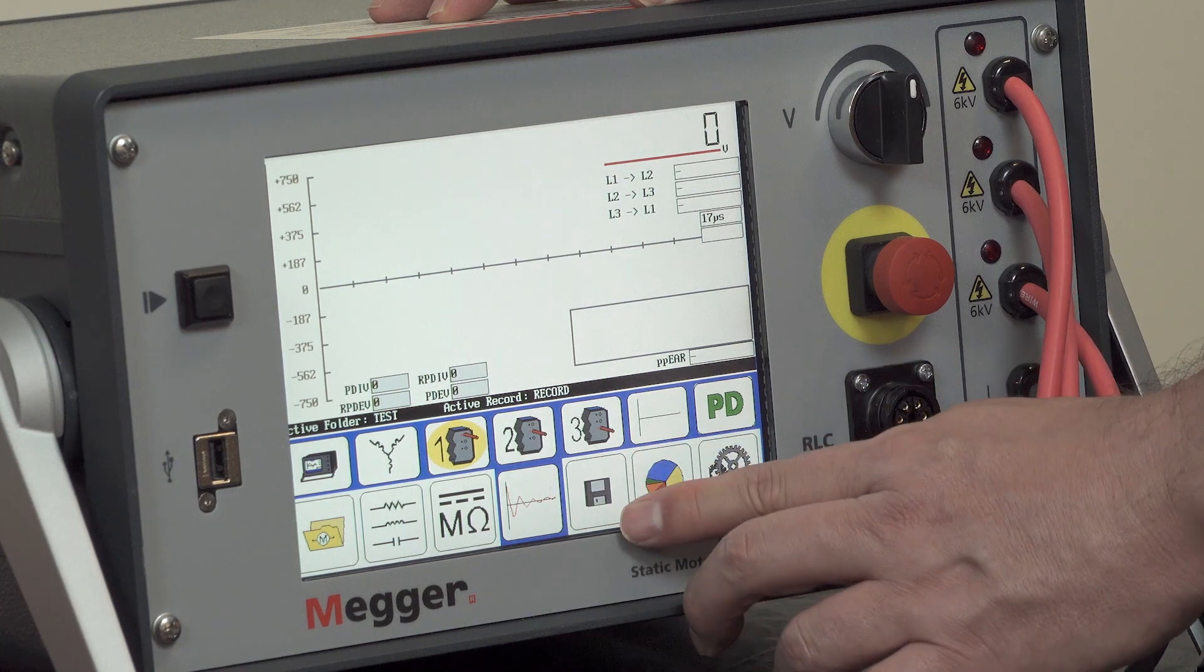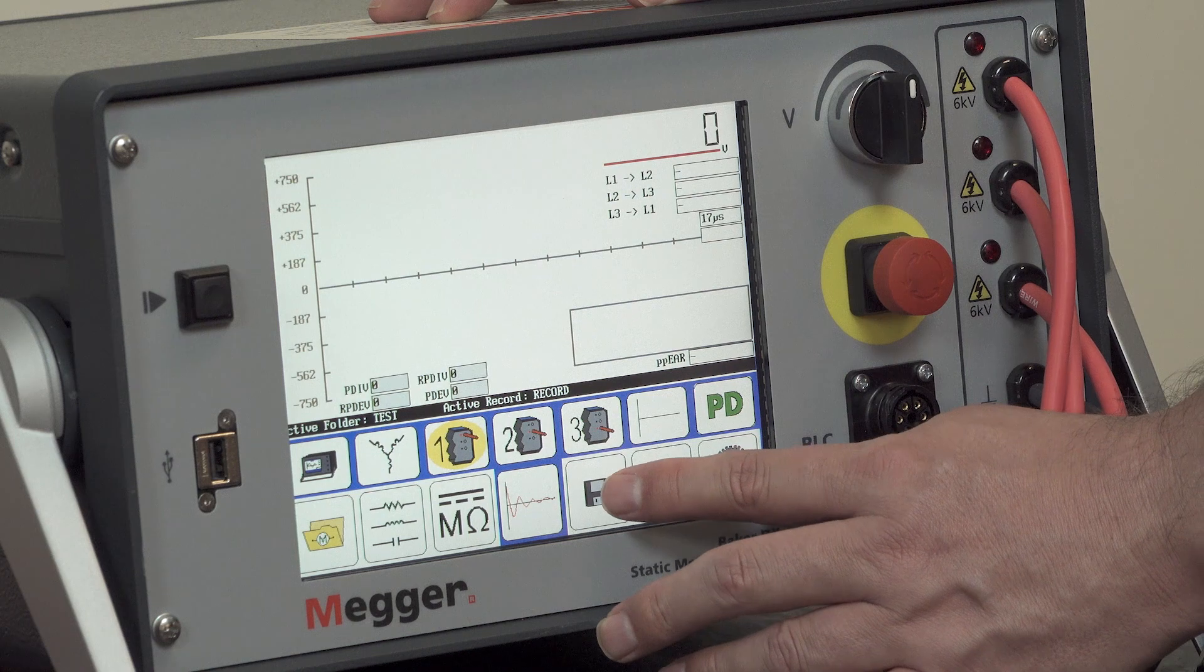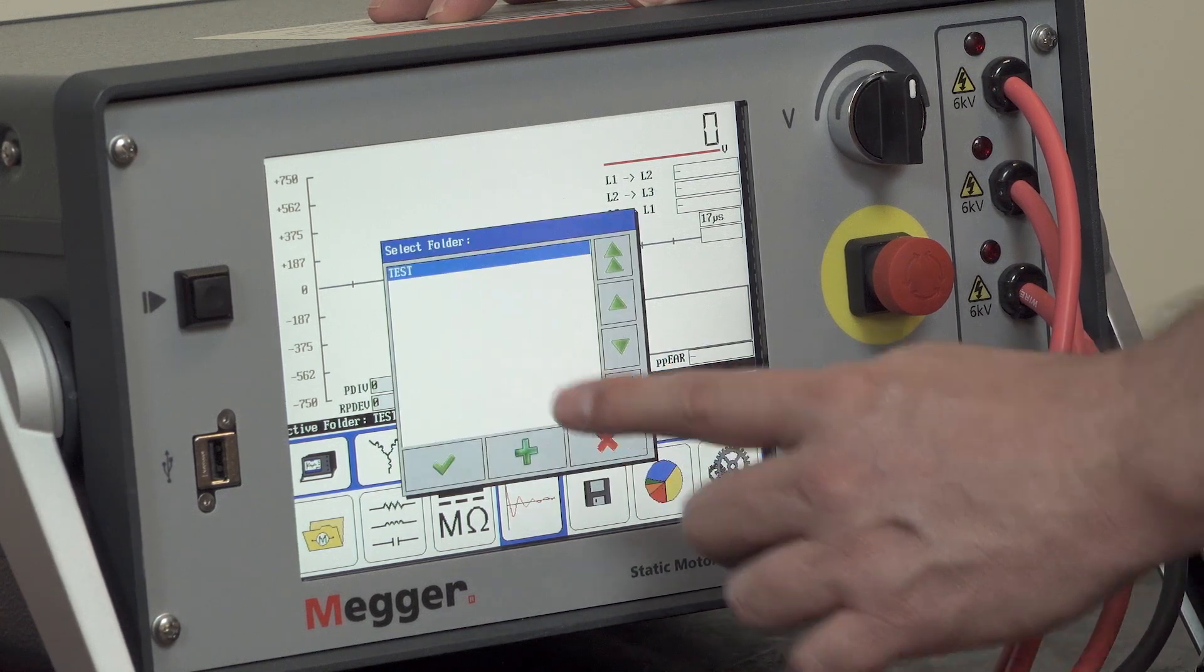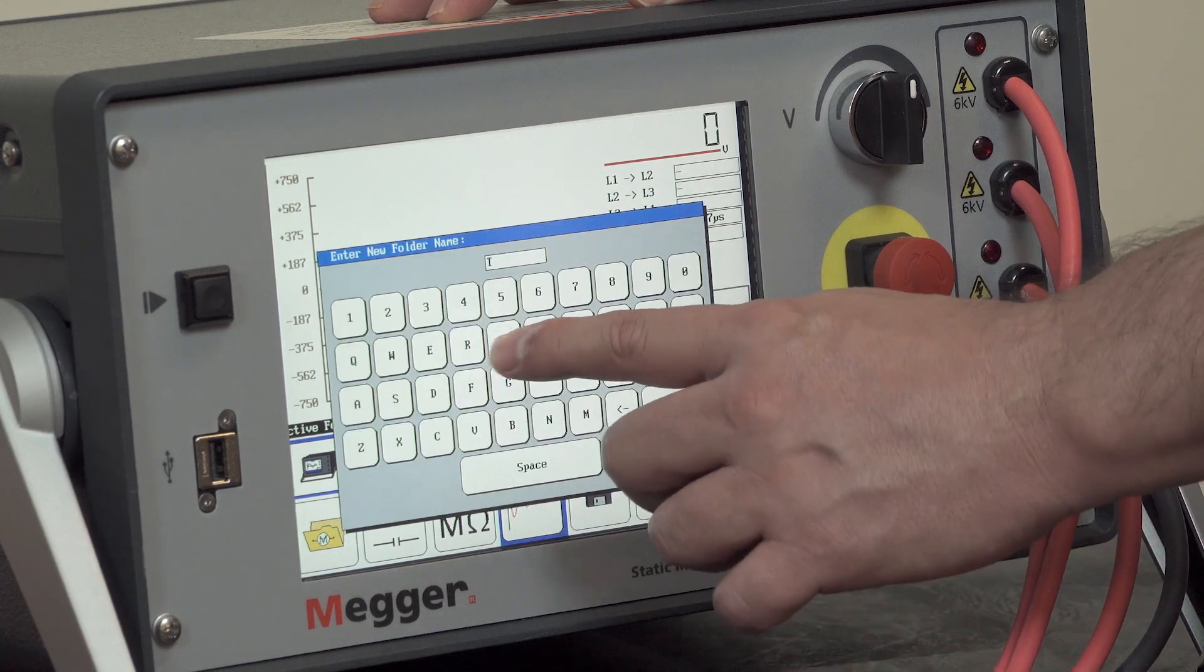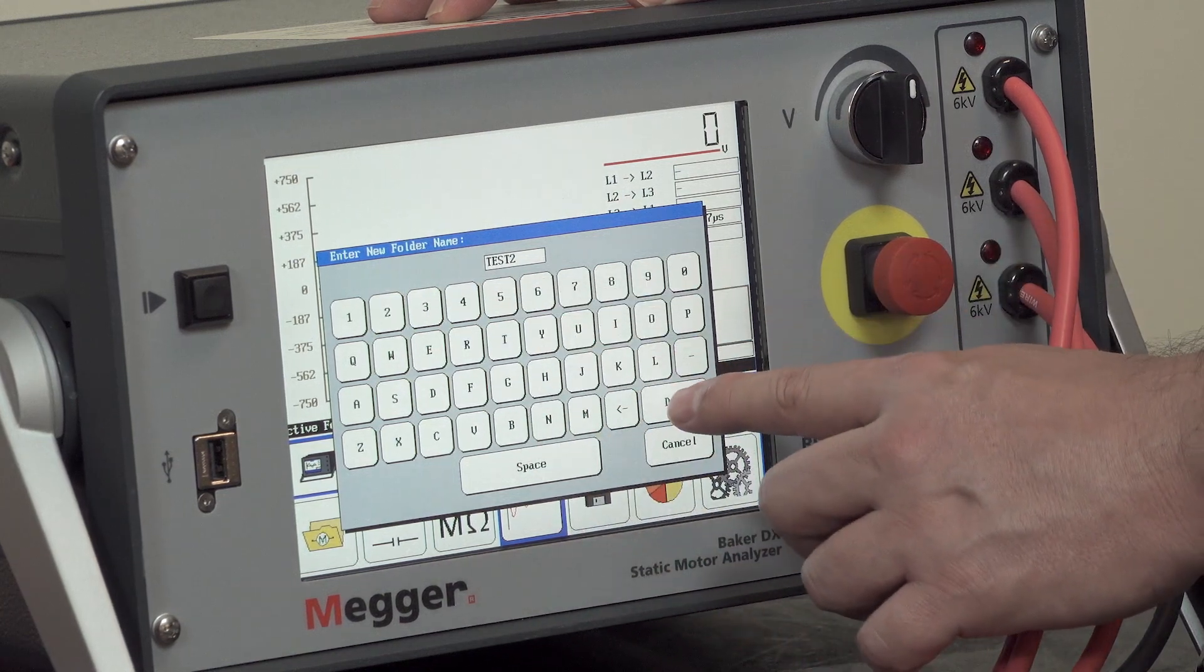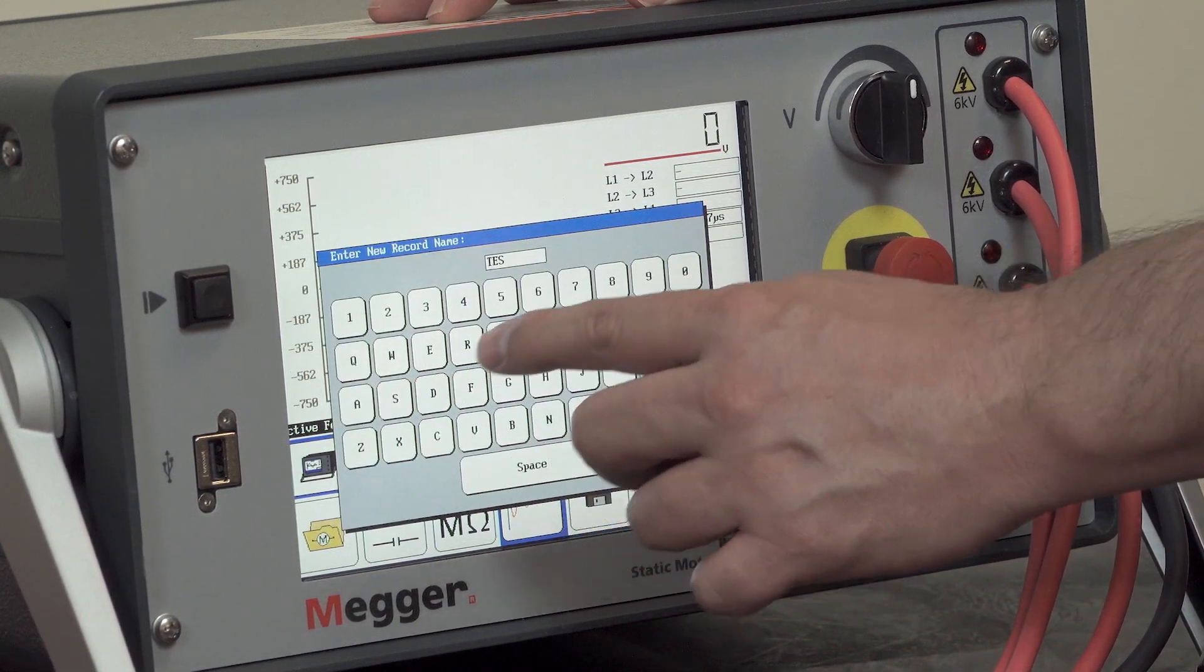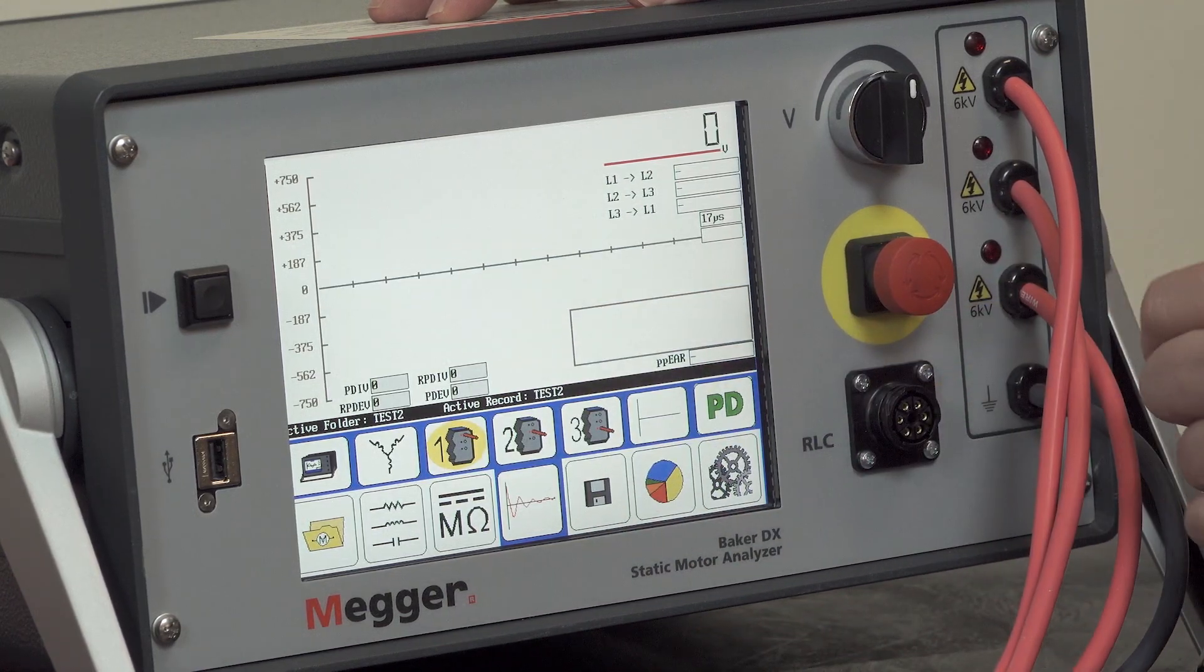The next icon is for saving data. Once the test point has been captured, you can hit the save icon, and then you can save to the active folder and record, or you could denote a new test record here by adding a new folder, typing in the name of the folder, hitting done, and then adding a new record, hitting done, and then the data will be saved.